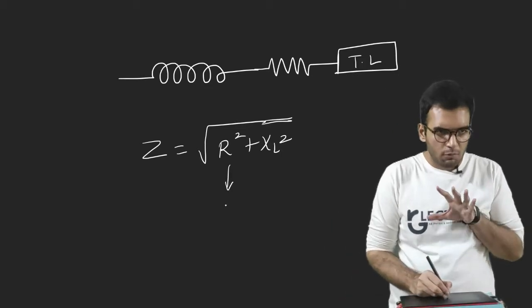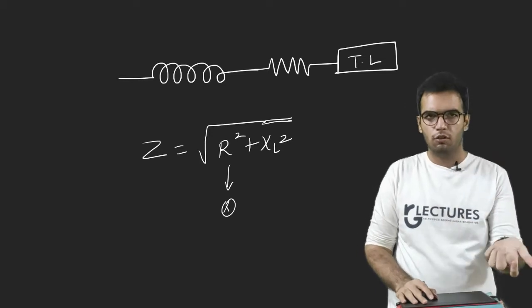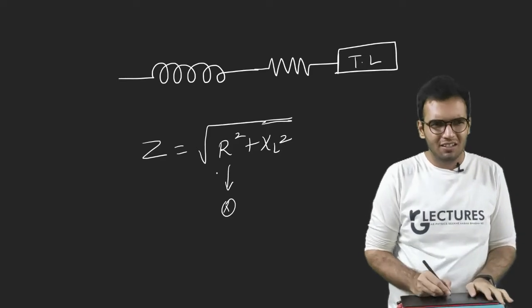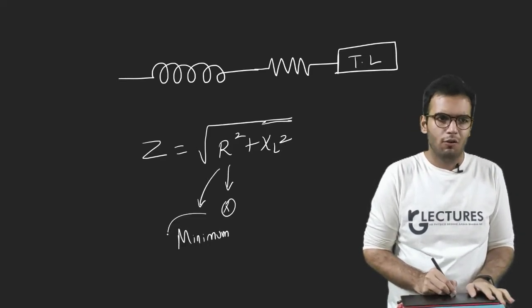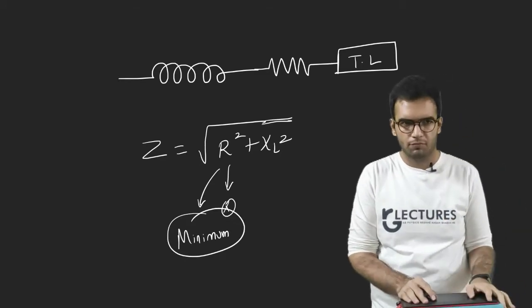Of course I cannot remove my R. I need my R because resistance is a must. I cannot directly connect a tube light, I need resistance. So I take minimum value of resistance. I keep a resistor, but I consider its minimum value.